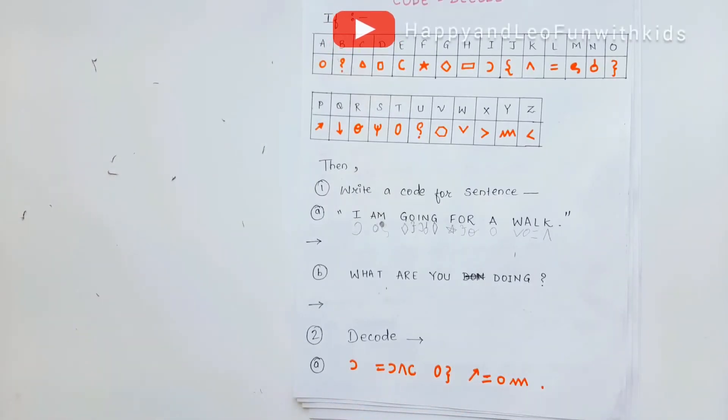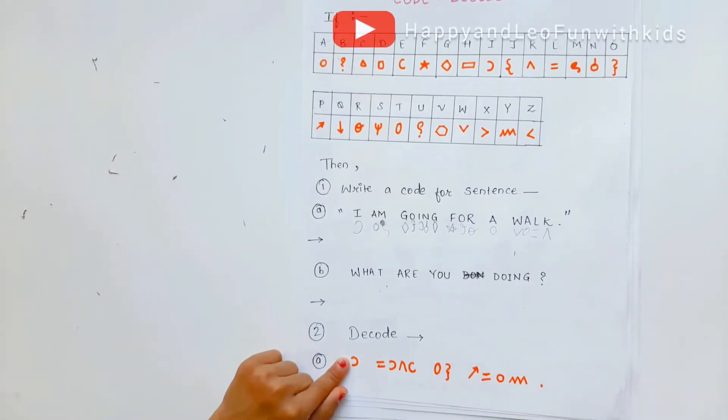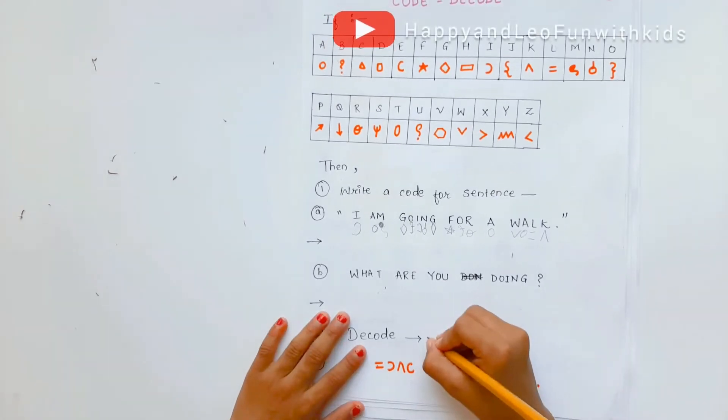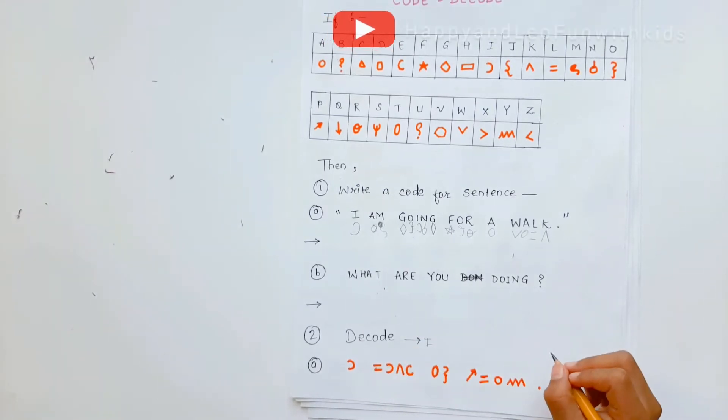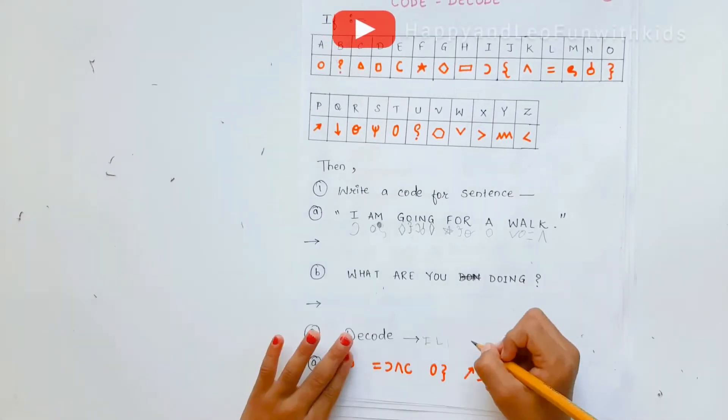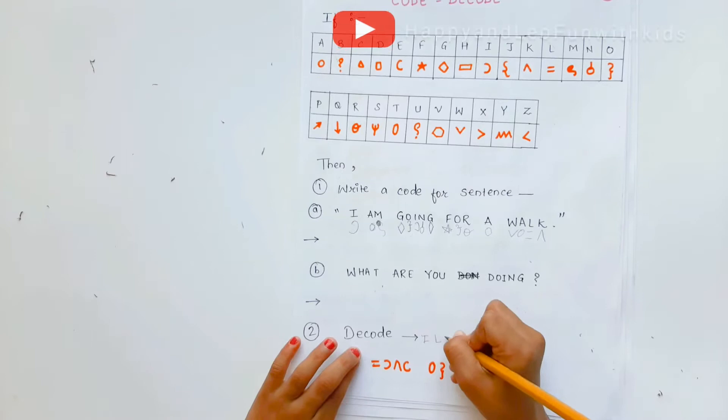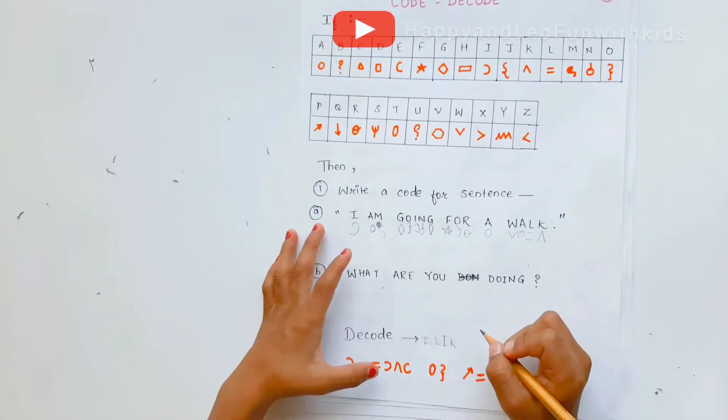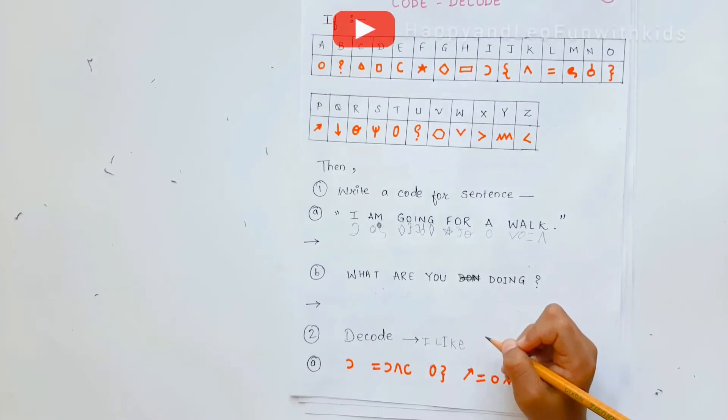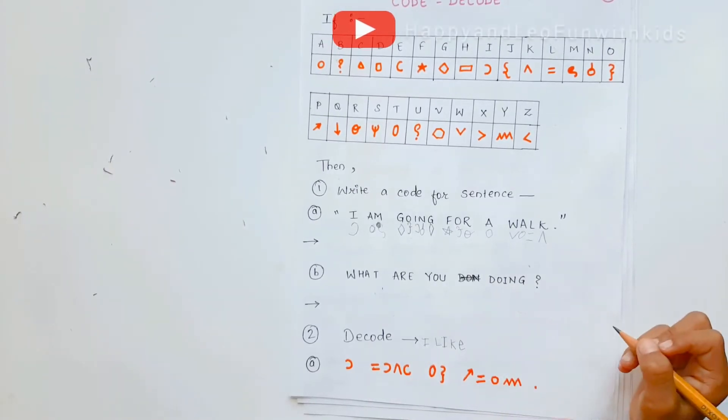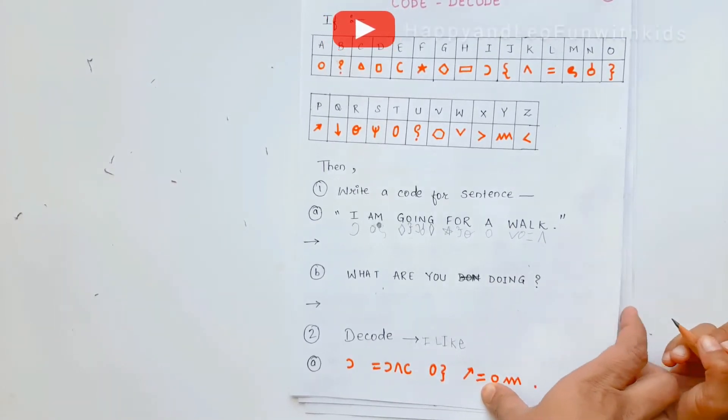So we got to do the decoding. See over here, it was I. That's how we have to add. And then equal sign, it was L. I again. K. E. Right, like this. You need to decode this again.